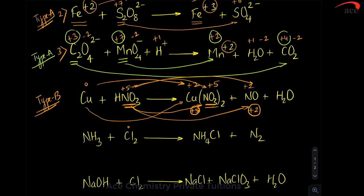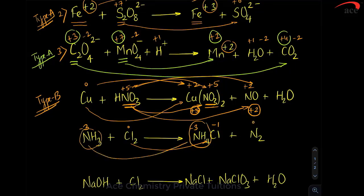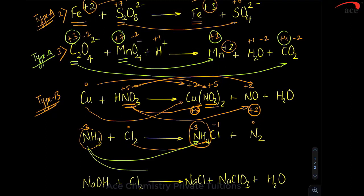Consider another example: chlorine is 0 and chlorine changes to −1 in one place. Nitrogen is −3, whether it is ammonia or ammonium ion, it is −3, and nitrogen is also 0. So nitrogen is going to two different states — one in which its oxidation state remains the same and the other where its oxidation state has changed. One remaining same, the other undergoing a change. This is quite different from a simple redox reaction and we will call it Type B.